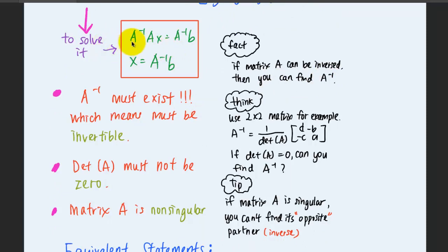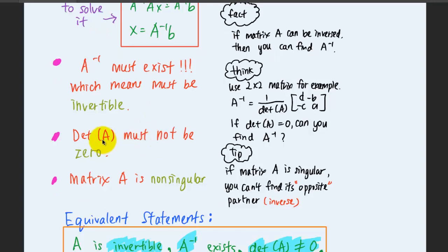To have a solution for this system of linear equations, the matrix inverse or the inverse A must exist, which means that it must be invertible. Then the determinant of the matrix A must not be zero.